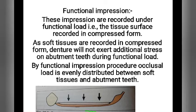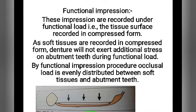Before proceeding further, you should know what a functional impression is. These impressions are recorded under functional load, that is the tissue surface is recorded in compressed form. As soft tissues are recorded in compressed form, the denture will not exert additional stress on the abutment teeth during functional load. By the functional impression procedure, occlusal load is evenly distributed between the soft tissue and the abutment teeth.